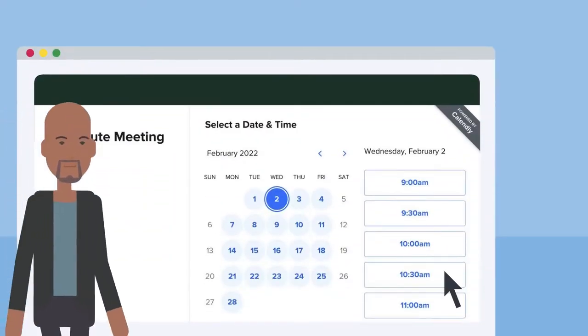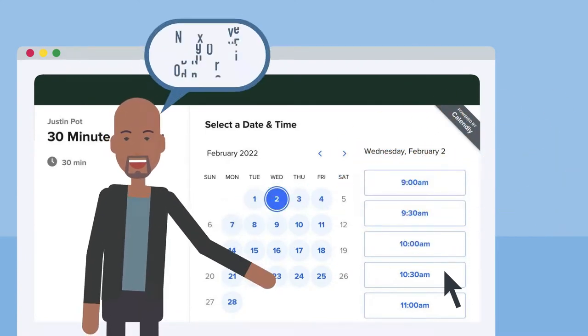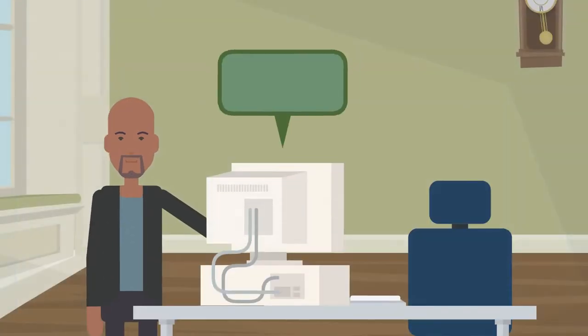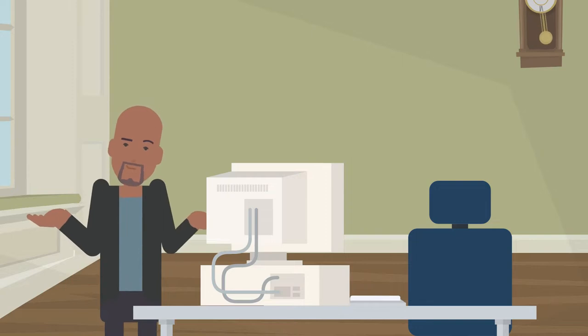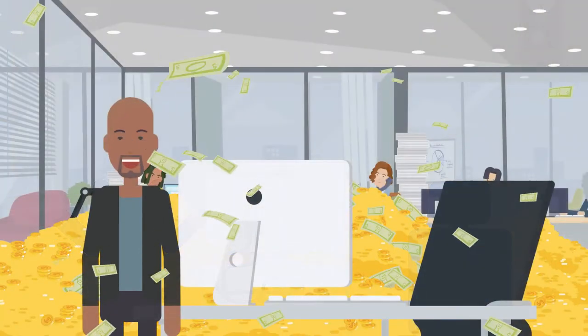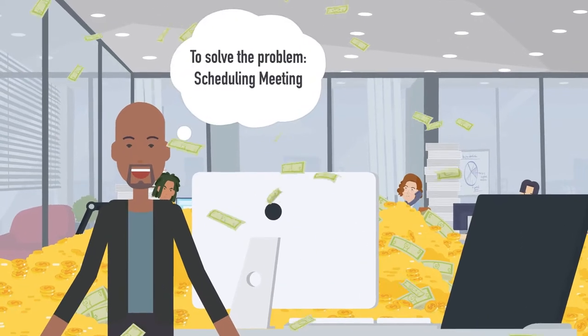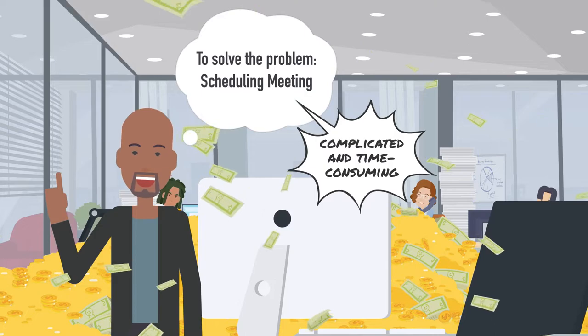Calendly is a great example of what's possible for entrepreneurs, even if you don't have an extensive background in coding or tech. When Tope Awotona created the first version of Calendly in 2013, he had no idea that it would one day become a $3 billion company. He was simply trying to solve a problem that he had experienced firsthand. Scheduling meetings was needlessly complicated and time-consuming.